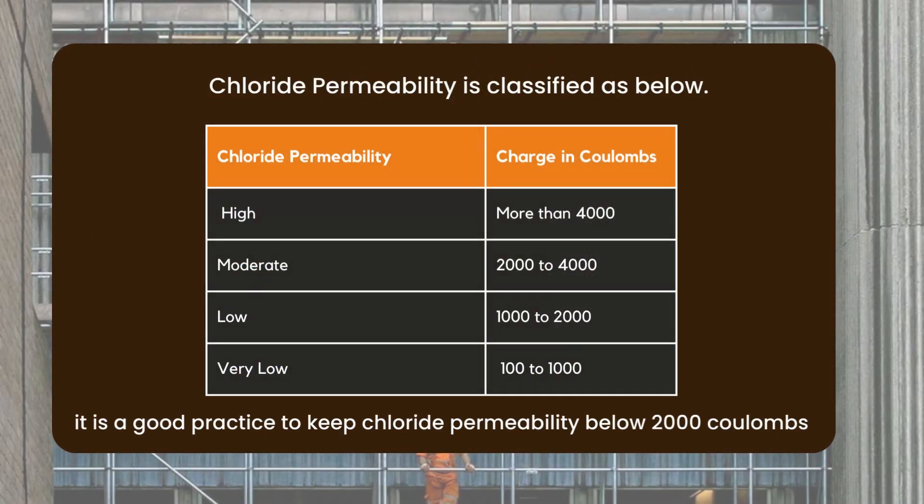Chloride permeability is classified as follows: High when charge passed is more than 4,000 coulombs; Moderate when charge passed is between 2,000 to 4,000 coulombs; Low when charge passed is between 1,000 to 2,000 coulombs; and Very Low when charge passed is between 100 to 1,000 coulombs. It is good practice to keep chloride permeability below 2,000 coulombs.